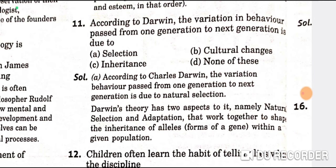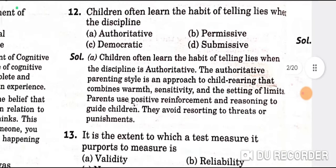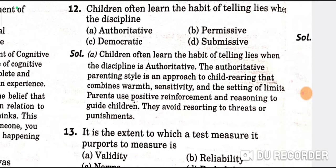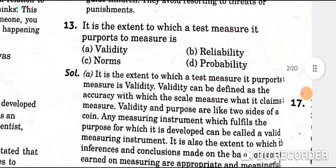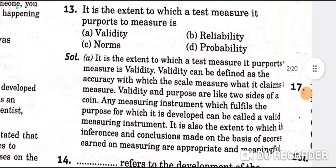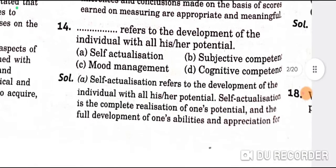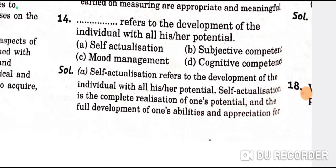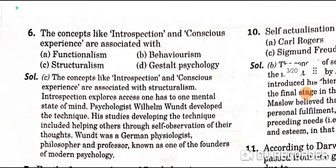According to Darwin, the variation in behavior passed from one generation to the next is due to selection — A is the correct option. Children often learn the habit of telling lies when the discipline is authoritative — A is the correct option. It is the extent to which a test measures its purpose — that is validity — A is the correct option. Self-actualization refers to the development of the individual with all his or her potential — A is the correct option.